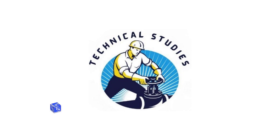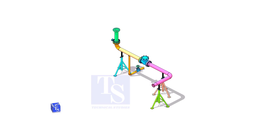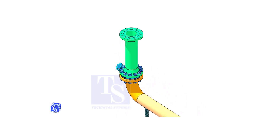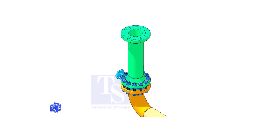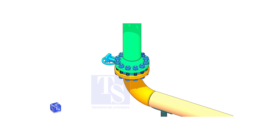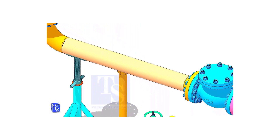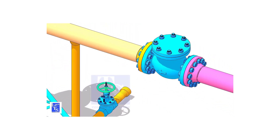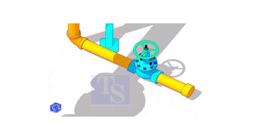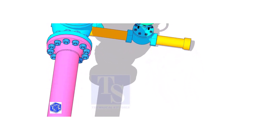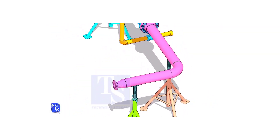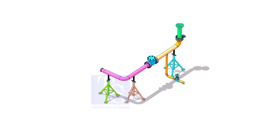Welcome to technical studies. Knowing how to read an isometric drawing of piping is important for engineers, supervisors, and fitters. In this video, I will explain what is actually represented by the symbols and terms shown in this drawing. You can download this drawing — the link is given in the description. Please subscribe, like, and comment.